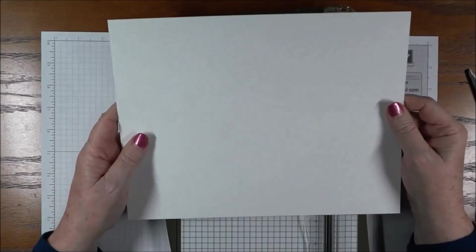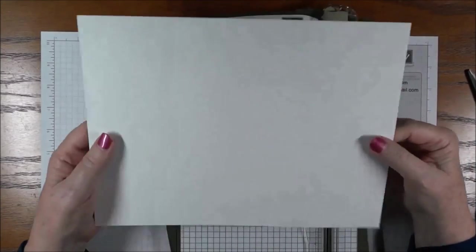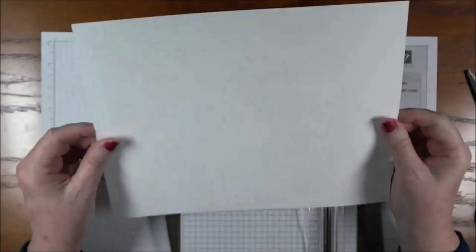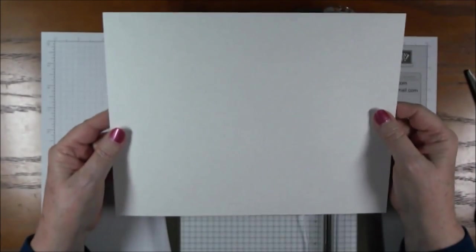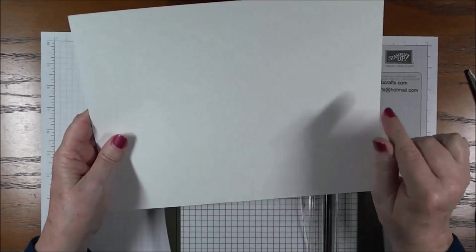Now, to make this easel, you're going to need one sheet of thick cardstock. It's going to be 8 1/2 by 11, and you can get two easels out of one sheet.